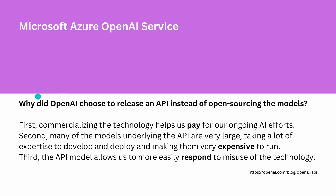OpenAI is very clear about why they chose to release an API instead of open-sourcing the models. First, commercializing the technology helps them pay for ongoing efforts — and remember, there was a heavy investment by Microsoft into OpenAI, and they have a profit-sharing agreement, so they have to pay back Microsoft. Second, many of the models underlying the API are very large and expensive to run. Third, it allows them to respond to misuse of technology, since everything runs on their servers, giving them tighter control. They have to pay the bill, pay the rent, and pay back their investors.